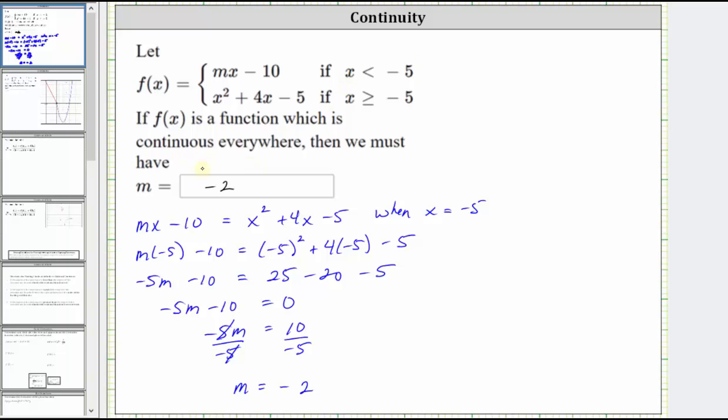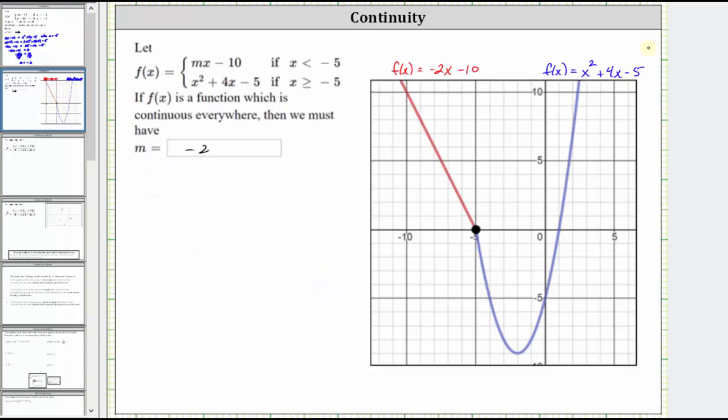And we can check this by sketching the two function rules over the given intervals, which I've already done. f of x equals negative two x minus 10 when x is less than negative five is graphed here in red. f of x equals x squared plus four x minus five is graphed here in blue if x is greater than or equal to negative five. And notice how the piecewise defined function is continuous everywhere.